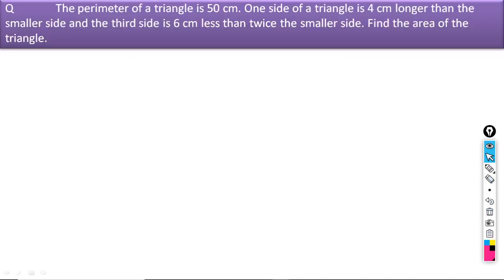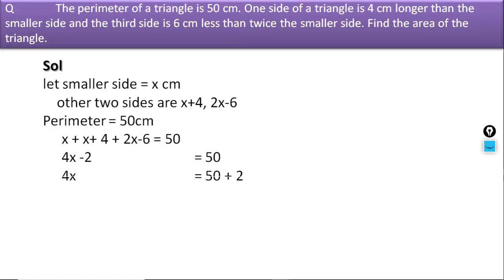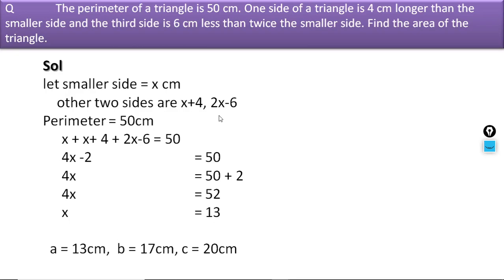Now let us try another problem. The perimeter of a triangle is 50 centimetres. One side of the triangle is 4 centimetres longer than the smaller side, and the third side is 6 centimetres less than twice the smaller side. Find the area of the triangle. Let the smaller side be x. Then the other sides are x + 4 and 2x − 6. Using the perimeter, x = 13. So the sides are 13, 17 and 20.